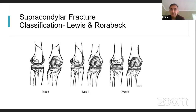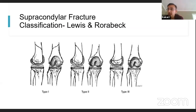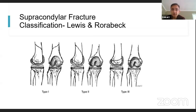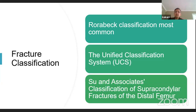For supracondylar fractures — the most common type — the Lewis and Roderberg classification is what you should know for your exams. There are other classifications such as the UCS (Unified Classification System) by Su and associates, but most people use Lewis and Roderberg. Type 1 is above the femoral condyle with a stable implant; Type 2 is also with a stable implant but extends beyond the flange; Type 3 is when the implant is unstable. This classification helps decide the treatment plan.